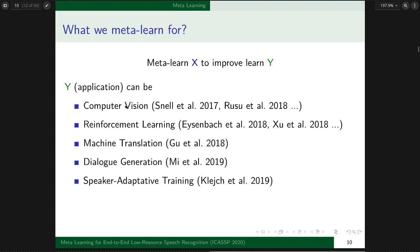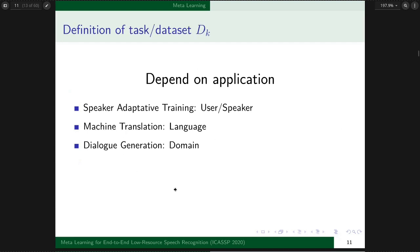Applications include computer vision and reinforcement learning. In recent years, since 2018, people started applying meta learning in speech and language processing, like machine translation, dialogue generation, and speaker adaptive training.